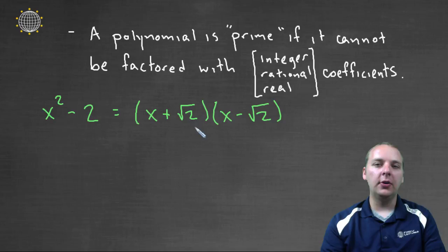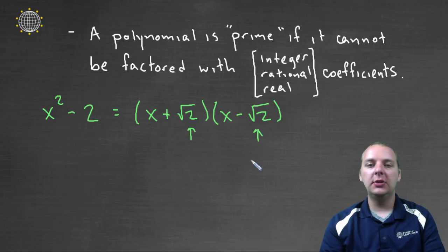Okay, so that factored, but normally when we factor we like to have integers here and here. So it's just a matter of, are we okay with having these or not?